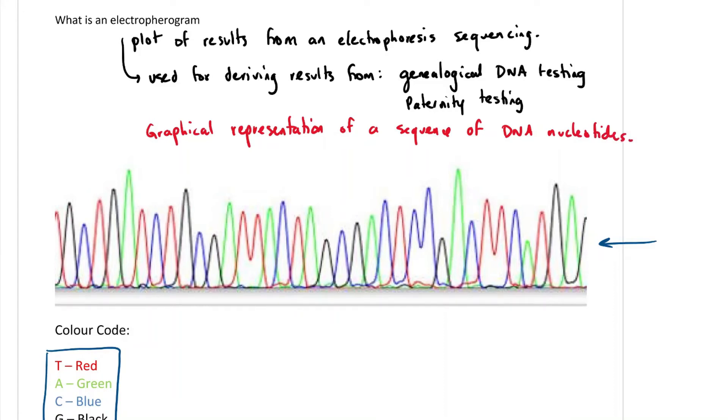And to read this, it's actually quite easy. You'll always be given some sort of color code. The color code is given down here, and as soon as you know what the color code is, you can actually start plotting this all the way through.